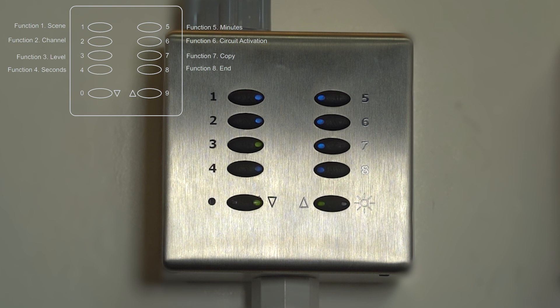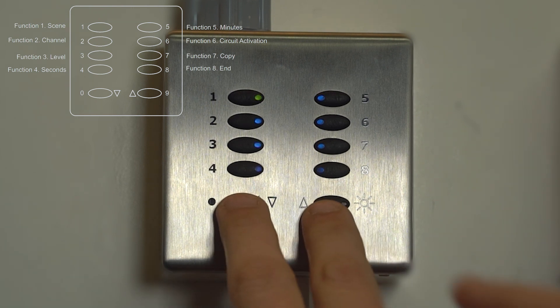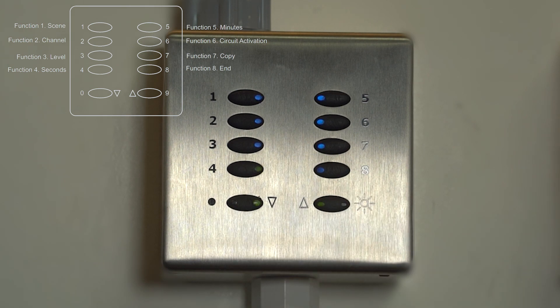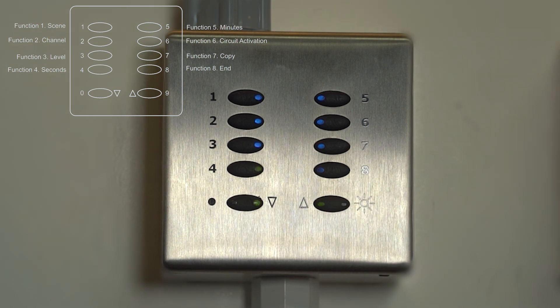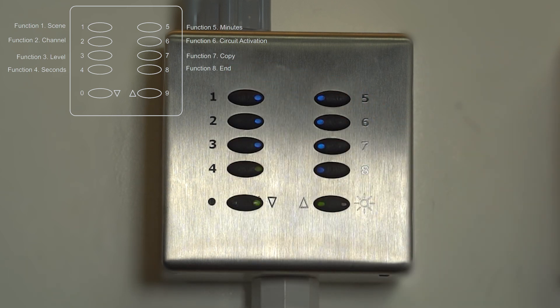If you need to change the fade time of a scene, press and hold the bottom two buttons, and number 4. You then have a fade rate of seconds. The default is 05 for 5 seconds, and you can increase this number as needed.